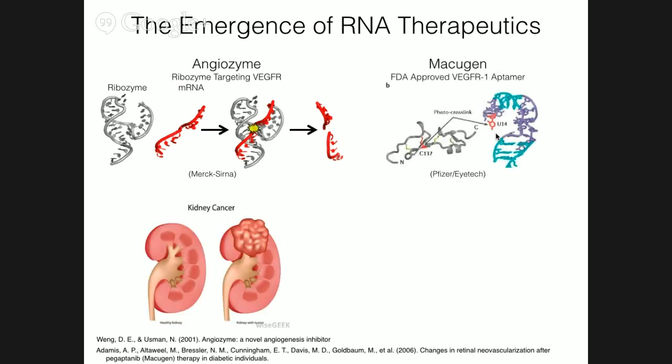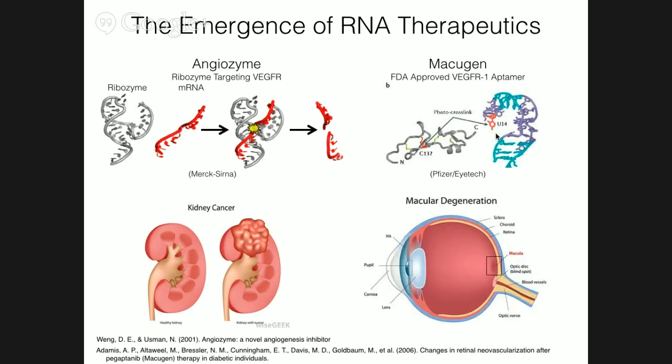In addition, on the right, we have the recently FDA-approved Macugen aptamer, which inhibits VEGFR1, another VEG receptor, to treat wet macular degeneration, which is caused by abnormal blood vessels forming in the eye that leak blood. Both of these are really great examples of what can be accomplished with RNA design, but I really think this is just the tip of the iceberg.